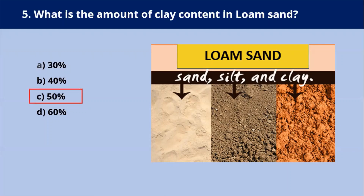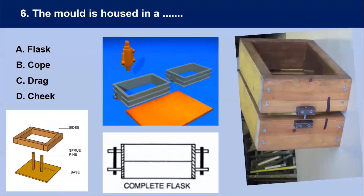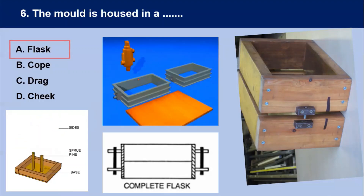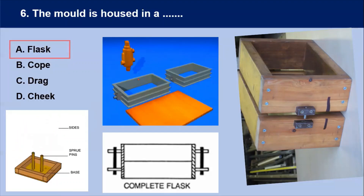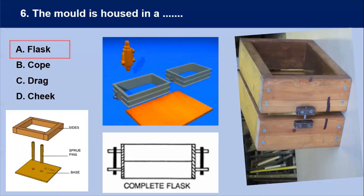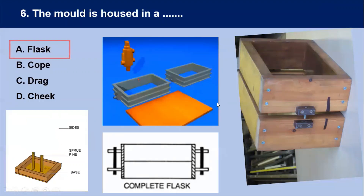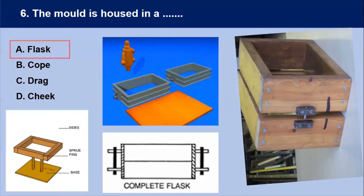Your answer is C — 50 percent. Next question: the mold is housed in a — we know that the mold is housed in a flask. A flask has only sides and no top or bottom, and forms a frame around the mold. The shape of the flask may be square, rectangle, or any convenient shape according to the mold. Our answer is A — flask.